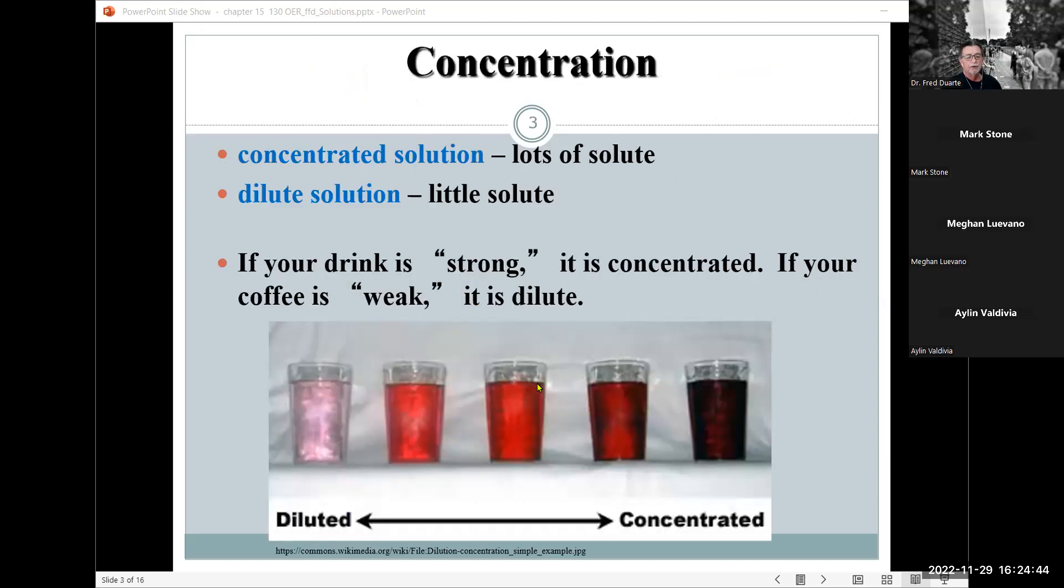But by and large, for us here at Chem 130, we generally deal with a solution of an aqueous solution, which the solvent is water. All right. So for example, we're familiar with this is pretty self-explanatory. Concentrated solution just basically means I got a lot of solute in there. I'm making iced tea. I tend to like it very sweet though. I'm not supposed to drink all that sugar. When I do drink iced tea, I put more sugar in it, makes it more concentrated.